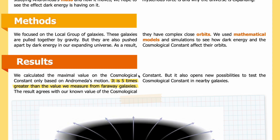Results. We calculated the maximal value of the cosmological constant based only on Andromeda's motion. It is five times greater than the value we measure from faraway galaxies. The result agrees with our known value of the cosmological constant, but it also opens new possibilities to test the cosmological constant in nearby galaxies.